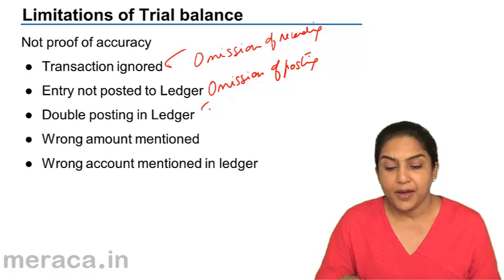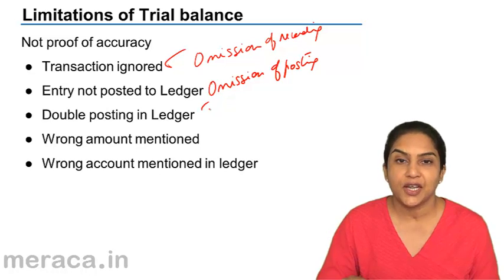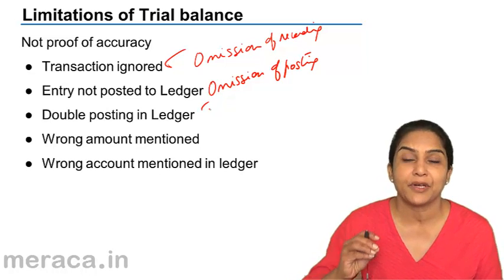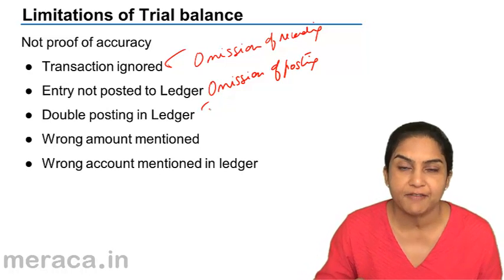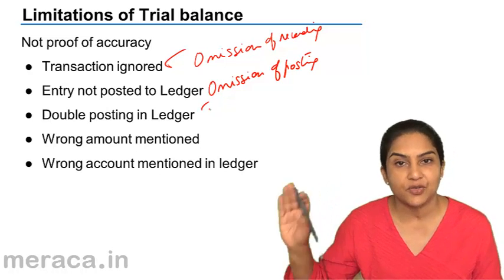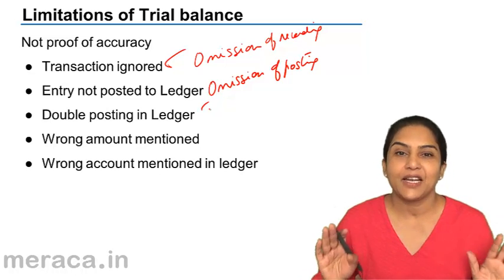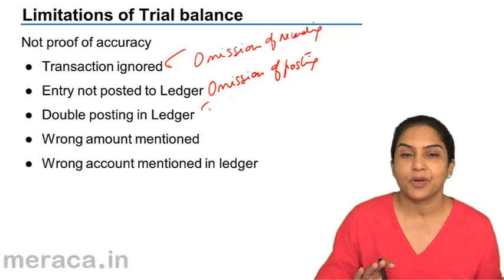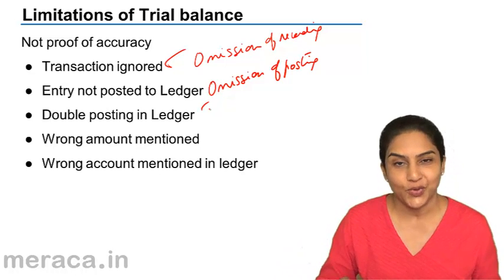Another case is recording the wrong amount. Suppose instead of a purchase of 50,000 we write a purchase of 5,000. Purchase will come down by 45,000 and creditors will come down by 45,000. But the trial balance will still agree — the purchase account will be wrong, the creditors account will be wrong, but the trial balance will tally.